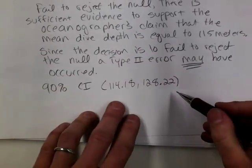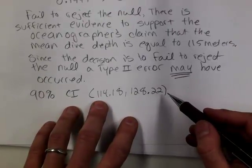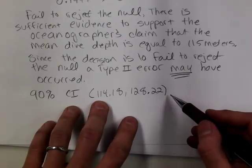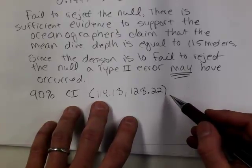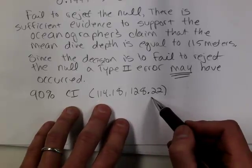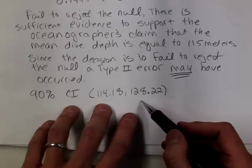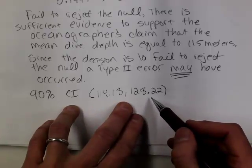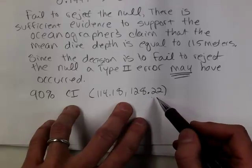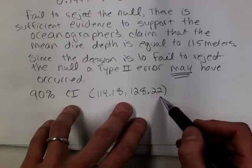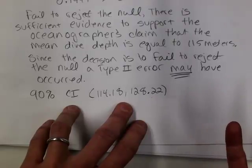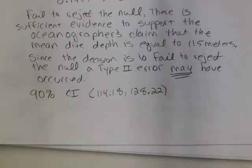Now, did this confidence interval, does it contain 115? Yes. It contains the equality from the null, which supported the oceanographer's claim. But this also gives me a sense of direction here. It looks like on average, they might also be diving a little bit deeper than that. Because some of this confidence interval is above 115. So as a researcher, this would give you more information rather than just equals versus not equals. Does that sound good? Okay.